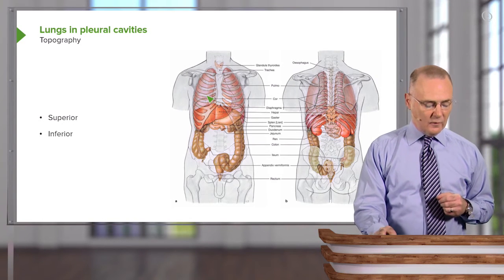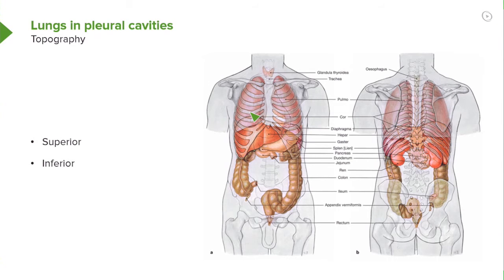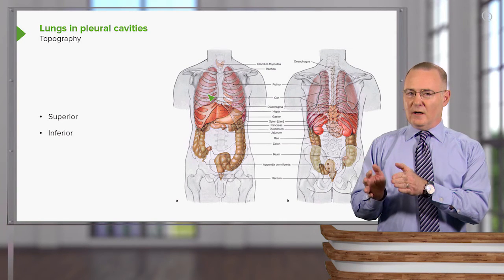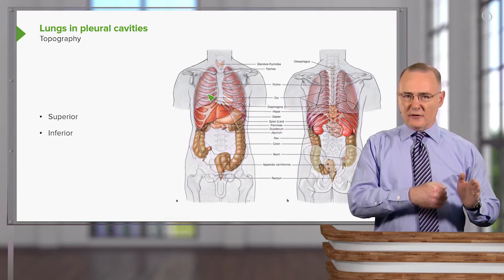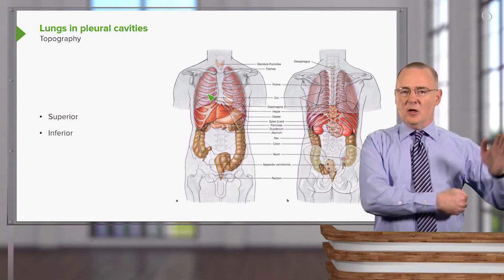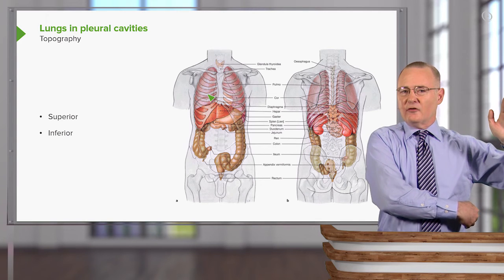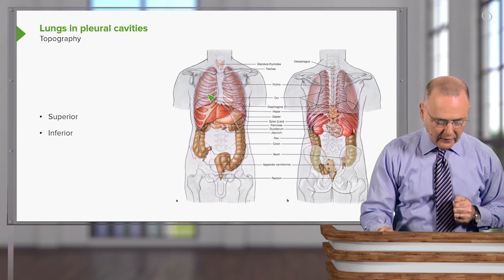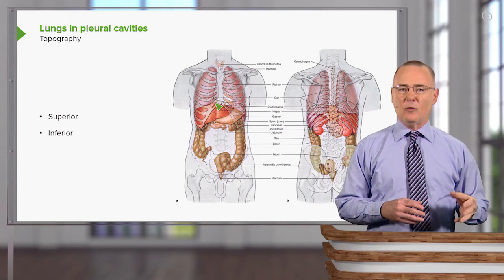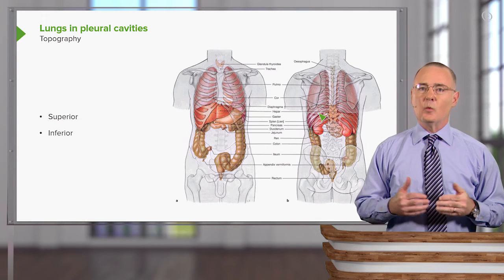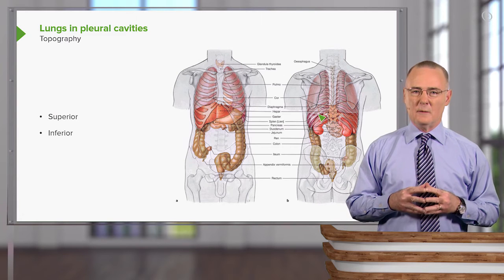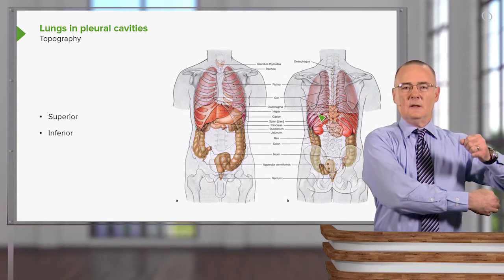If we start with the mid-clavicular, going to mid-axillary, going to the paravertebral, the inferior limits of the right lung and the left lung will be at rib 6 mid-clavicular. Mid-axillary, the lung will extend down to rib 8. Then posteriorly, the inferior limit of the right lung and the left lung will extend down to the level of your tenth rib. So it's 6, 8, 10.